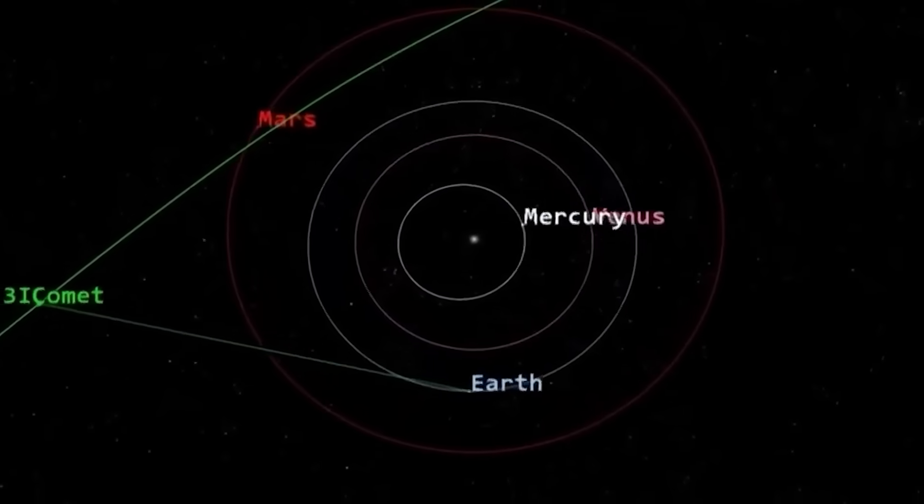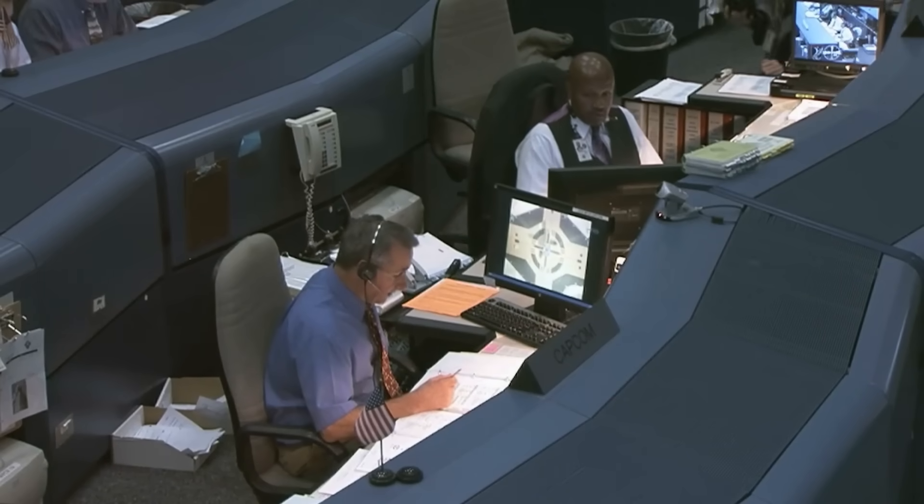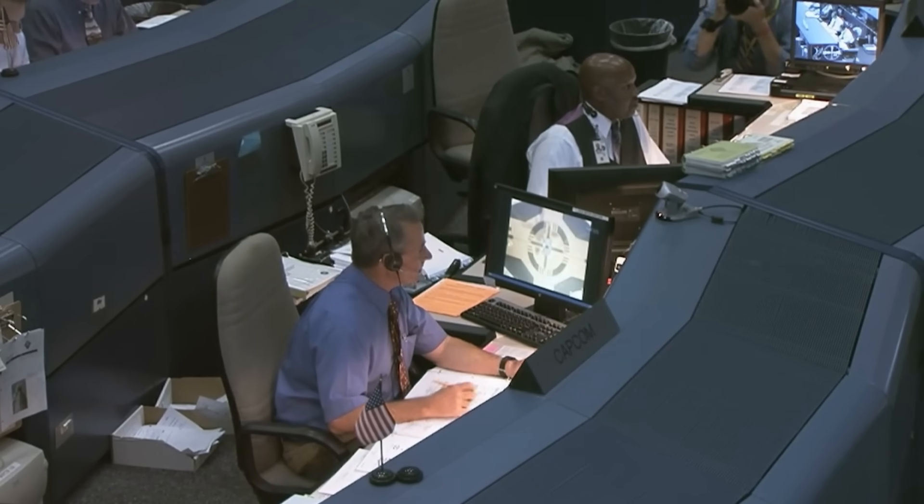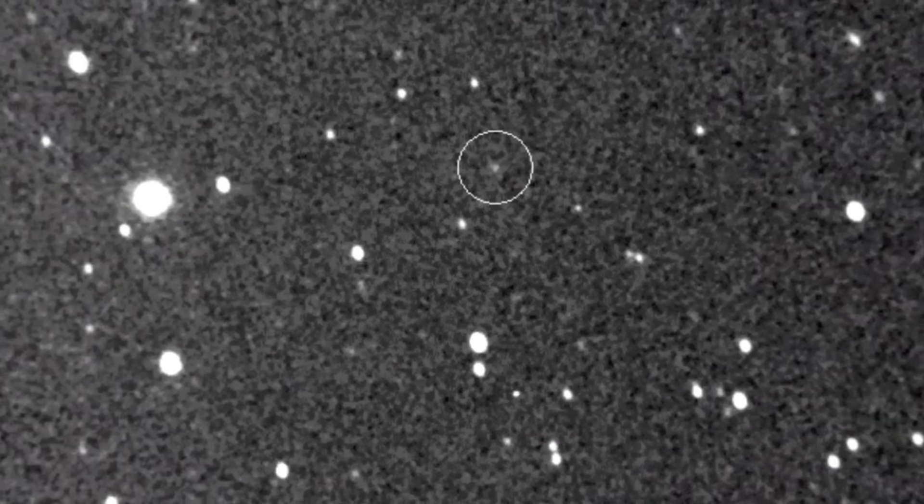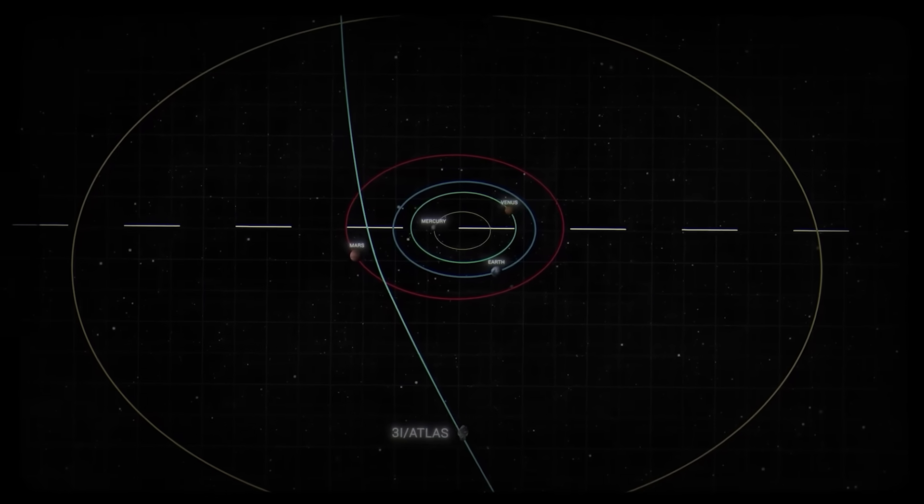The disruptive nature of 3I Atlas is amplified by the fact that it's not just chemically strange. Its trajectory, as we'll soon discover, is equally perplexing. Scientists are now collecting data with extreme care, knowing that this isn't just another icy rock. This is a chance to observe, up close, an object formed in a primordial universe, a time capsule sailing through our cosmic neighborhood.